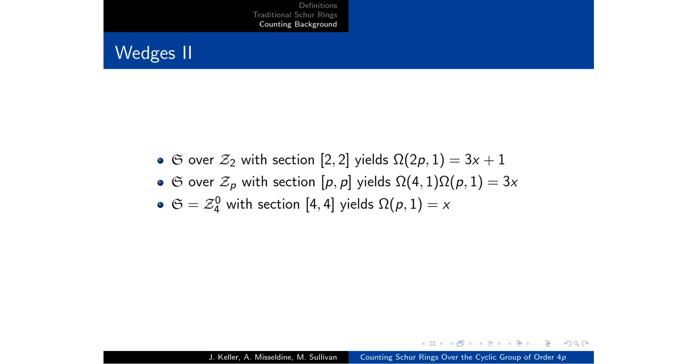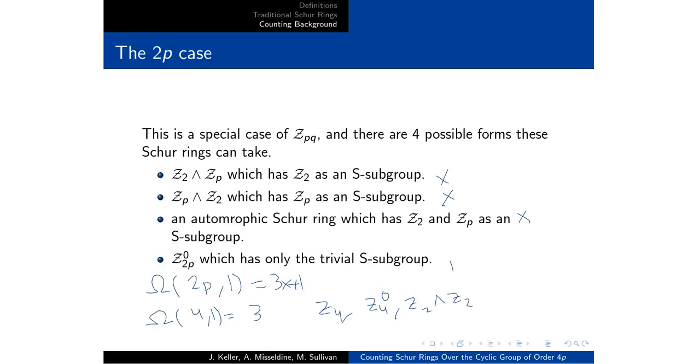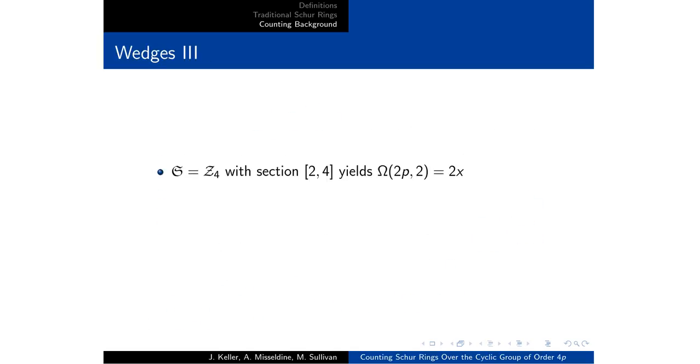So for omega 2P of 2, if we go back to our 2P case, we want all the Schur rings over Z2P that have Z2 as a subgroup. So that is Z2 wedge ZP and all of the automorphic Schur rings. And that's why we get the 2x there.